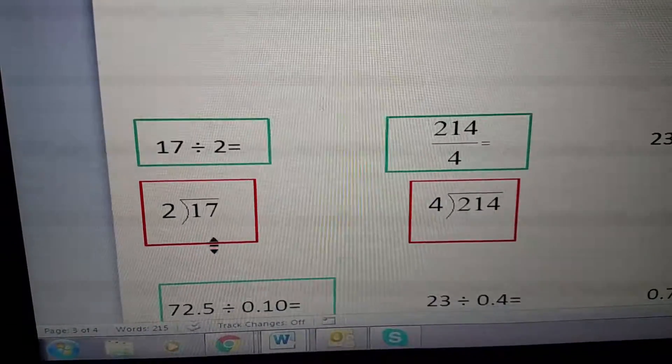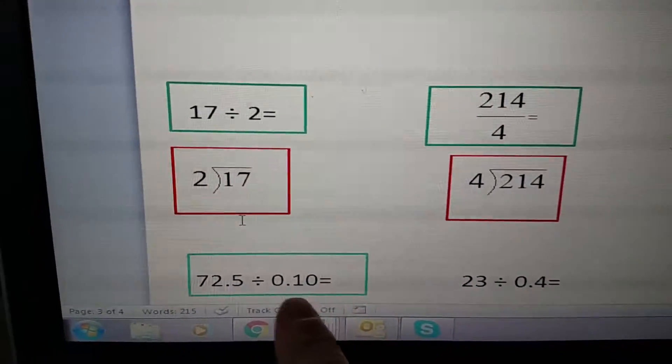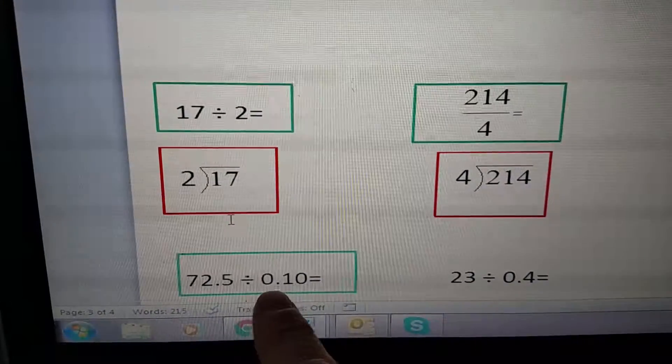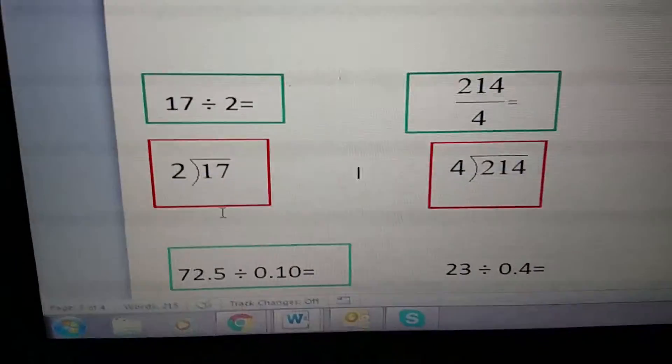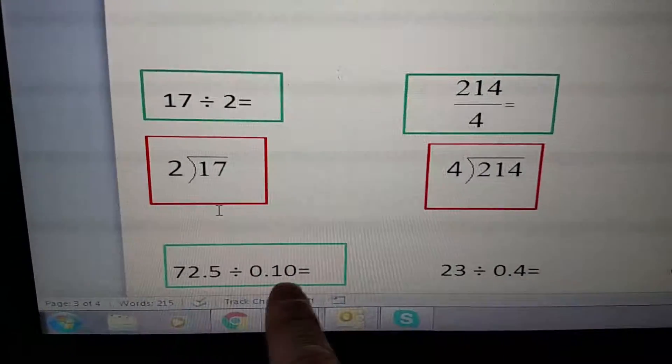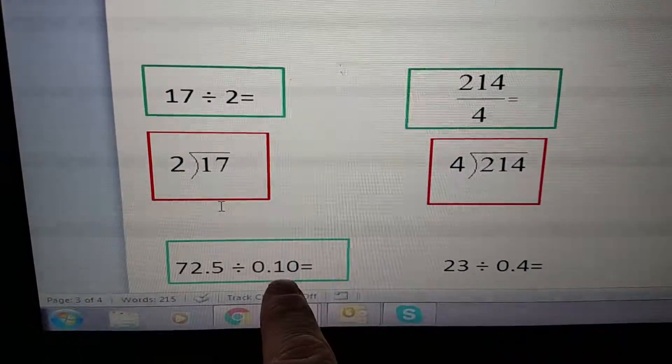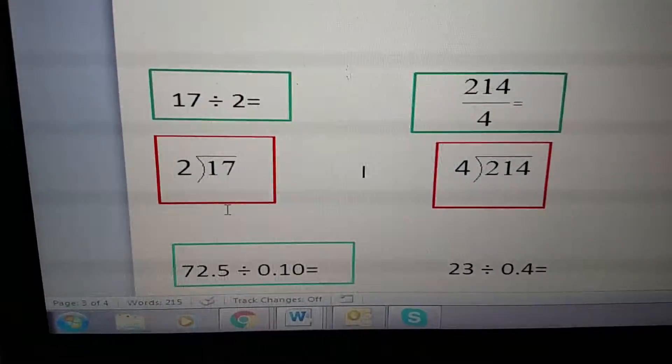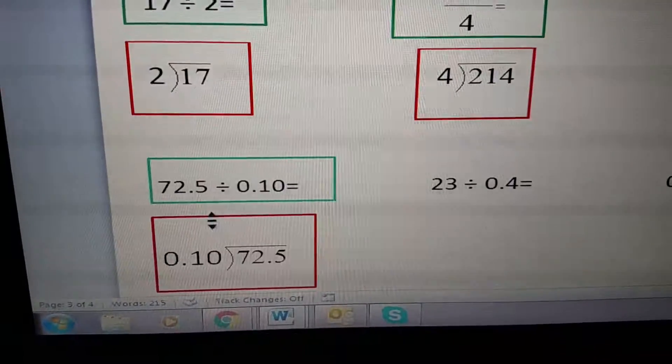Then I have this one here: 72.5 divided by 0.10. Same thing—my divisor is always the second number in a sequence when we have it written out like this. So this number right here is my divisor, which means it's going to go on the outside of my long division bracket.